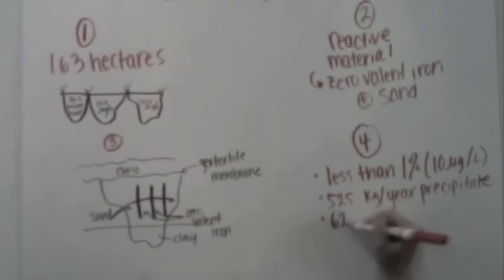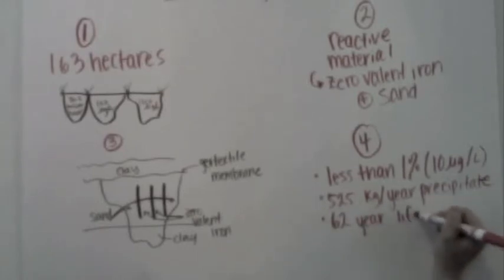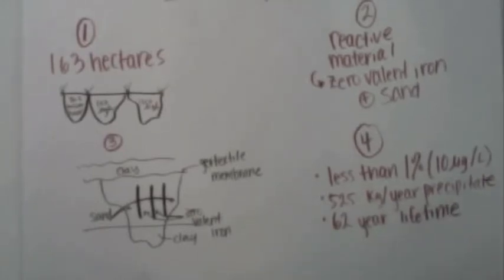The estimation of precipitates formed are of the order of 525 kilograms per year, which can reduce the conductivity of the barrier in the long run to a 62-year lifetime.